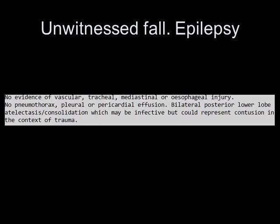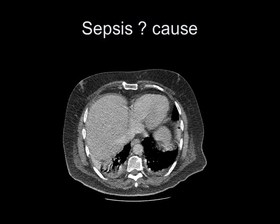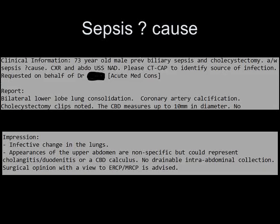It's really unlikely that an individual would have developed bilateral contusional change in their lungs from a presumed fall from standing. Here's a patient with sepsis, query cause — again we have that very characteristic atelectatic pattern at both lung bases symmetrically. Here's the report: bilateral lower lobe consolidation. This patient had presented with previous biliary sepsis and cholecystectomy, admitted with sepsis.